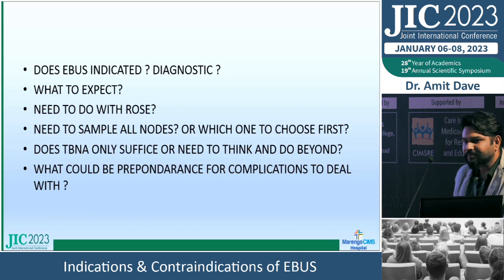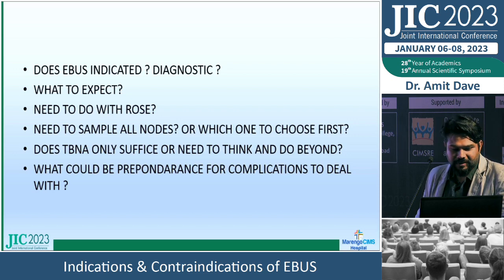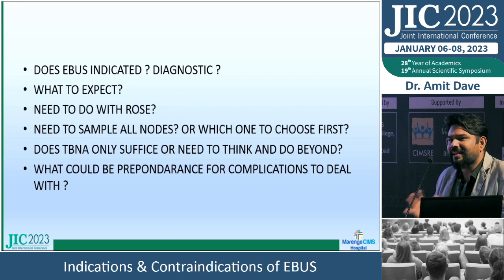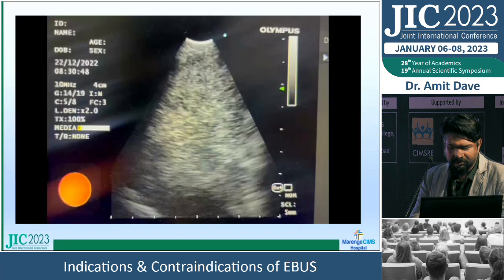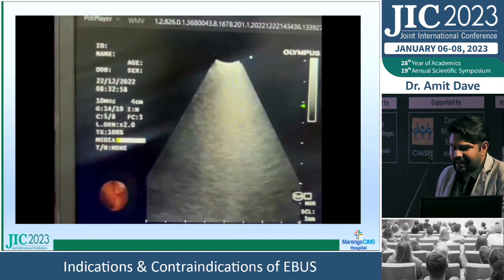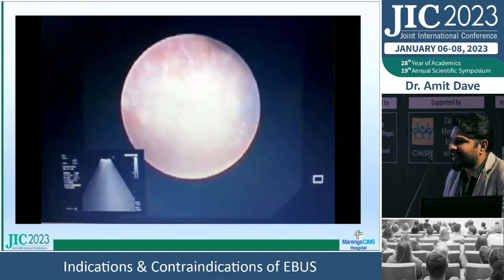Is EBUS indicated in this thrombocytopenic patient with hepatosplenomegaly? Yes, EBUS is indicated, but thrombocytopenia could be a relative contraindication. What is the safe margin for EBUS TBNA when the patient is thrombocytopenic? I performed EBUS with single-donor platelet support. The EBUS showed a huge homogeneous mass lesion. You can puncture a mass with EBUS — beyond simple cytology, you need to obtain good tissue sampling.